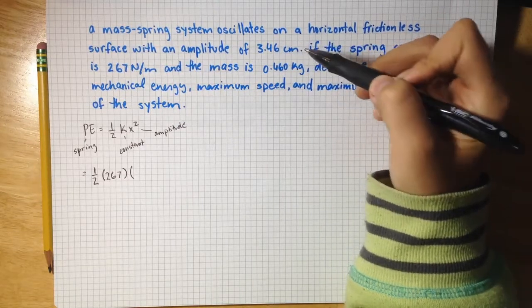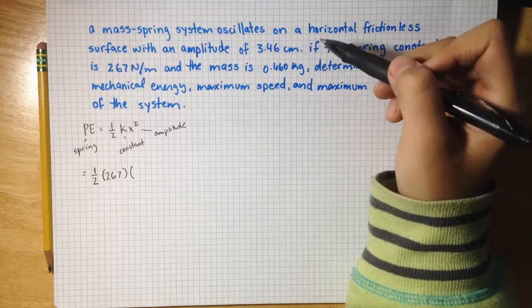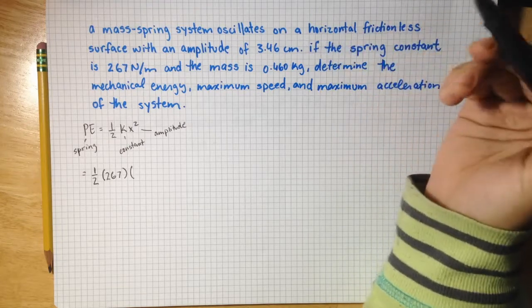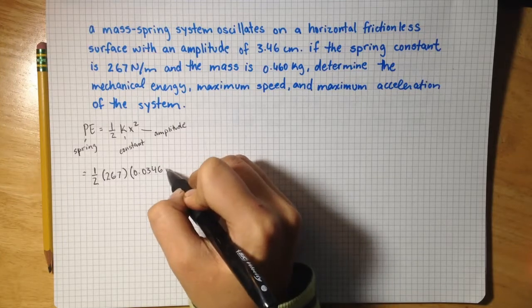So notice they gave us the amplitude in centimeters. We have to convert this to meters. So 3.46 centimeters divided by 100 is 0.0346 meters.